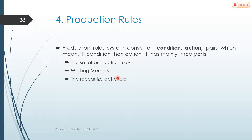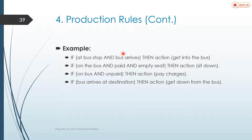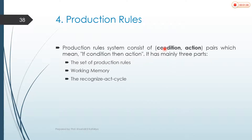Production rules are the widest method used for knowledge representation. They are also known as if-then rules because they contain the if and then keywords. Now let's look at a simple example to understand what a production rule is. The syntax for a production rule has two parts: a condition and an action.